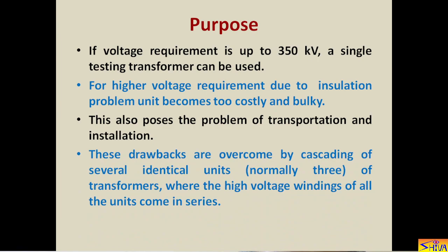These drawbacks are overcome by cascading of several identical units — normally three units of transformers where the high voltage windings of all units come in series. We use a cascaded arrangement of identical transformer units; they can be more than three but normally three units are preferred, the reason for which we will see afterwards.